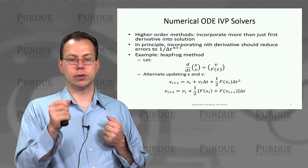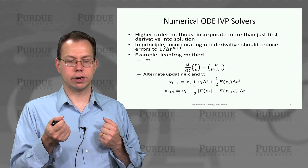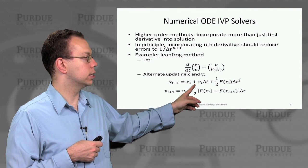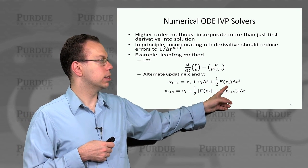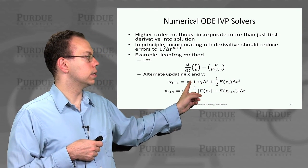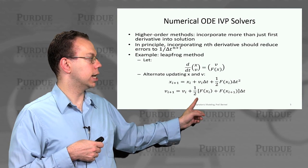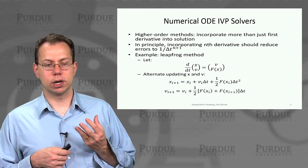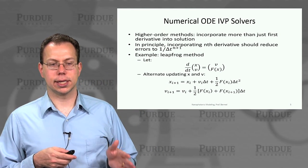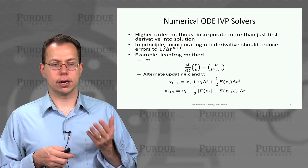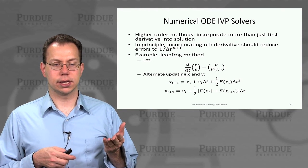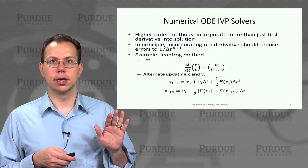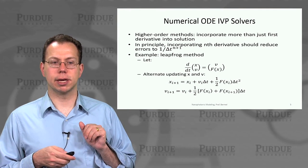We would now alternate between updating x and v. The rationale for doing that is especially if the force is not uniform, we can actually capture this to second order in time. When we update x_i and then update v_i, v_i is integrated with respect to delta t. But now we can actually more realistically capture these acceleration effects. The error of this approach should go as 1 over delta t squared. This approach is essentially the foundation for the finite difference time domain as well.